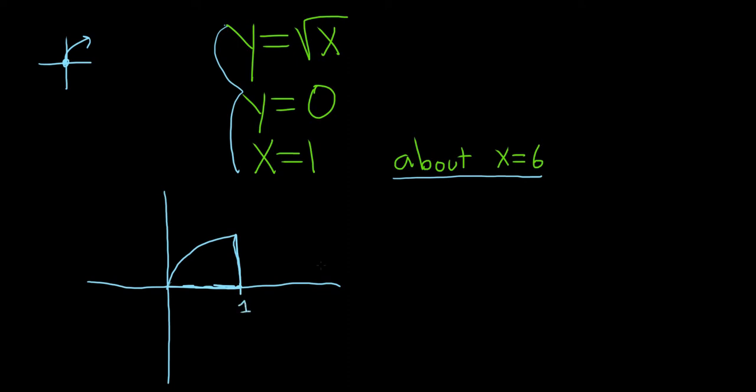And we're spinning this about the line x equals 6, which is also a vertical line right here. So whenever we use the shell method, our rectangles are always parallel to the axis of revolution, which in this case is x equals 6. So that means we have a nice vertical rectangle, which makes things easier. Whenever you have vertical rectangles, you have functions of x.